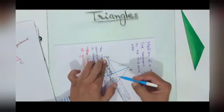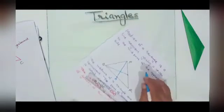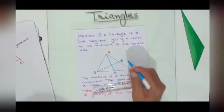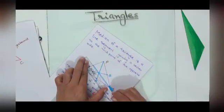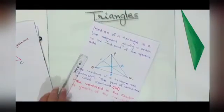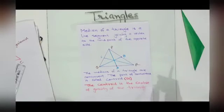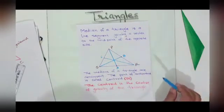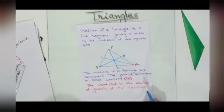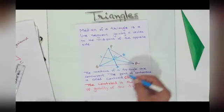Since a triangle has three vertices and three sides, it obviously has three medians. Drawing a median through Q to the midpoint of PR gives the second median QB. The third median goes from R to the midpoint of the opposite side, giving RC. We observe that all three medians are concurrent, meaning they pass through the same point. The point of their concurrence is called the centroid of the triangle.